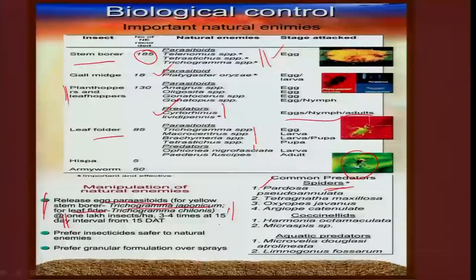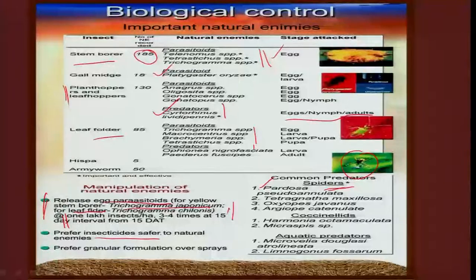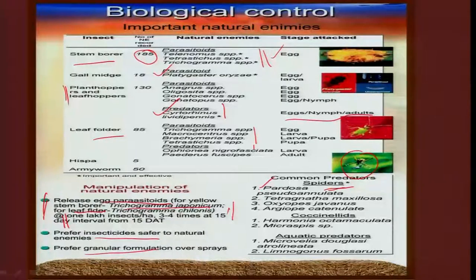In integration techniques, safer insecticides — particularly granular formulations — are preferred so there is no direct contact with parasitoids. This way the insecticide performs its toxic job while the parasitoids reduce the population in their own manner.